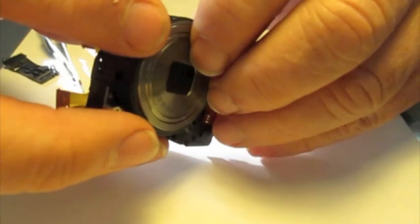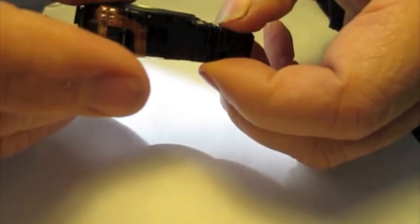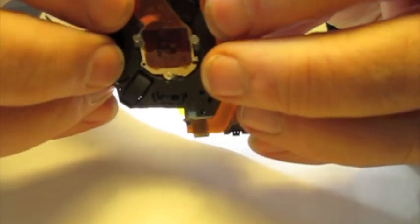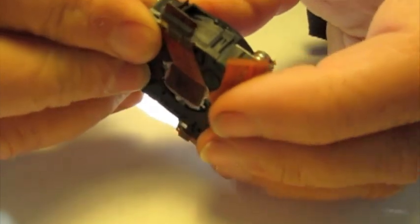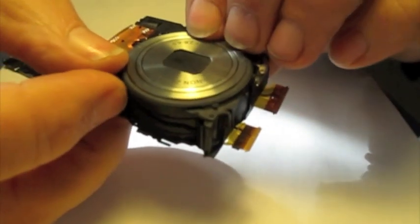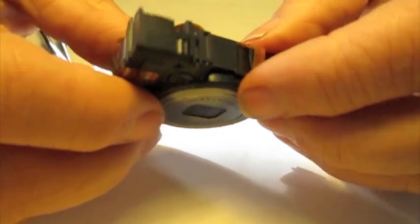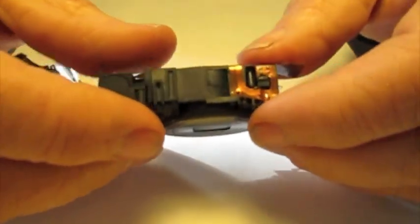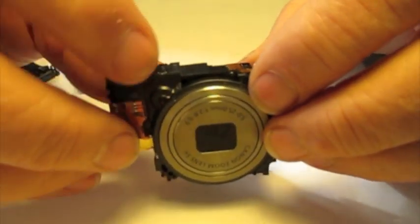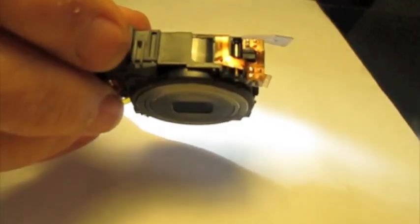Once I get it kind of lined up here, I'll go around and snap down all the tabs and make sure they're all indexed down all the way. Now our lens assembly is back together again and it's ready to go back into the camera. Hopefully everything will work again.